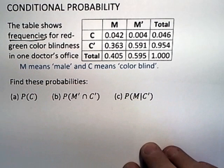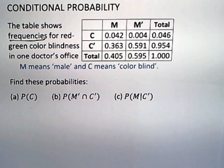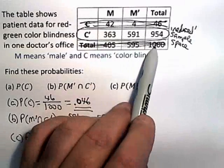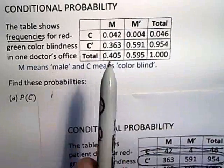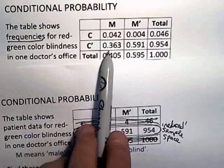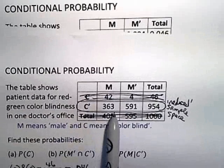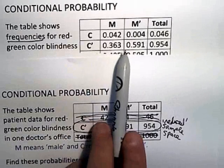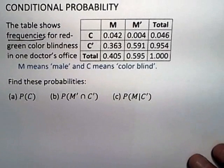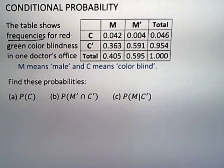This time it says the table shows frequencies for red-green colorblindness in one doctor's office. Frequencies. These aren't total number of patients now, these are frequencies. The frequencies are just the probabilities, and how did they come up with them? They just took the numbers in the original data and changed them to decimals. If you take 42 out of a thousand and make a decimal out of it you get 0.042. If you take 4 out of a thousand you get 0.004, and so on. So what they did is they took the raw data and gave it to you as a frequency table. You might not be given the raw data, you might be given that frequency table and you could still be asked those same three questions.